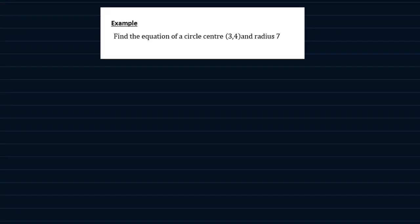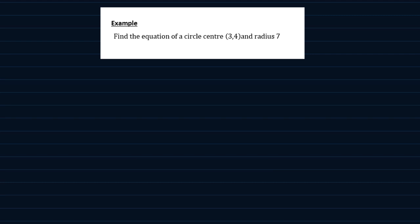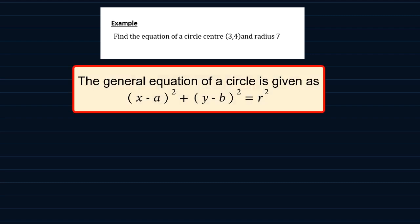Let us have a look at this example. Find the equation of a circle with center (3, 4) and radius 7. The general equation of a circle is (x minus a) squared plus (y minus b) squared is equal to R squared, where (a, b) are the coordinates of the center. So in this case, it comes out as (x minus 3) squared plus (y minus 4) squared is equal to 7 squared. And that's the simple answer.